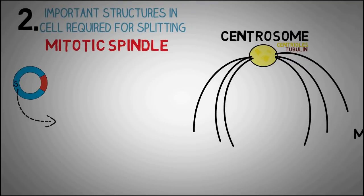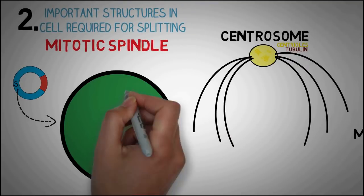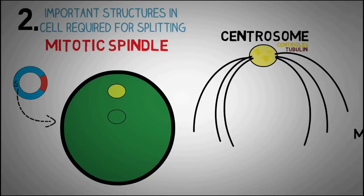During the S phase, the centrosomes also duplicate and the cell has two centrosomes now which migrate to the opposite ends of the cell.